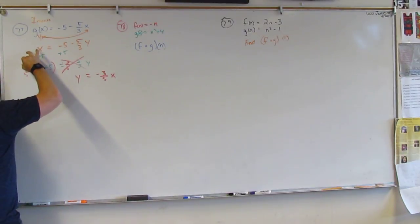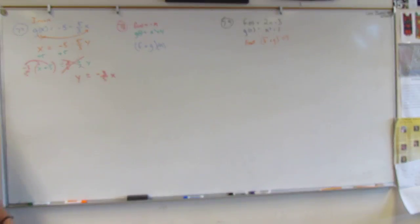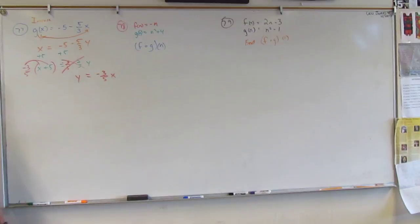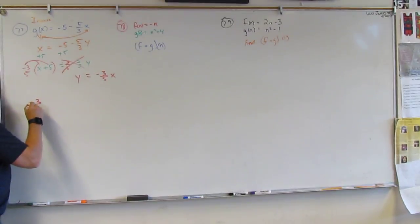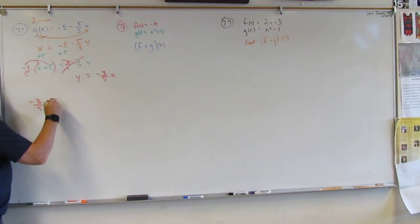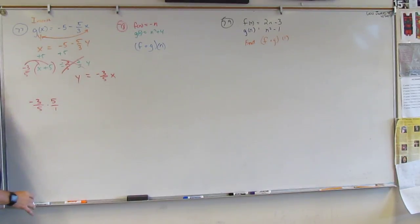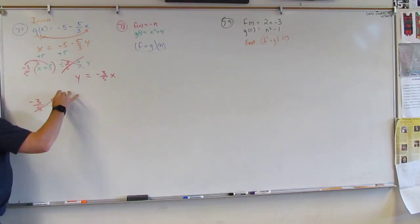And so then the Y will equal... What is negative 3 fifths times X? Negative 3 fifths X. Perfect. And then what is negative 3 fifths times 5? I don't know. Think of it like this. Negative 3 fifths times 5 over 1.